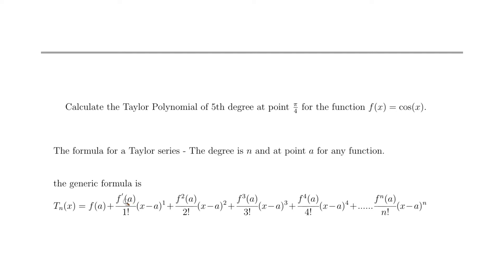There's a clear pattern: on the numerators we have the first through fifth derivatives; on the denominators we have 1!, 2!, 3!, 4!, and 5!; and the powers of (x − a) run from 1 up to 5. That's how the generic formula works.